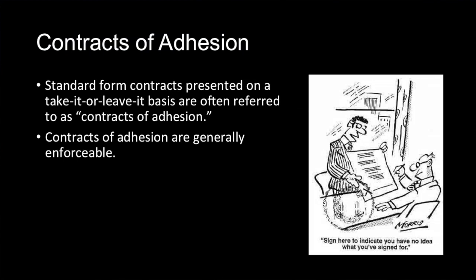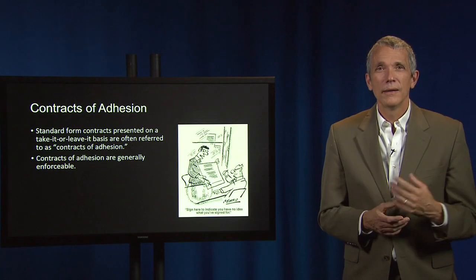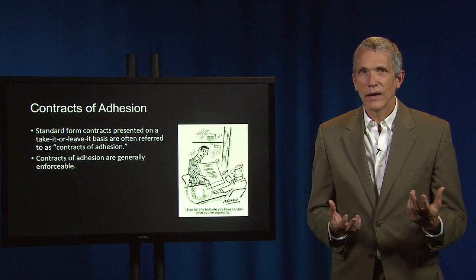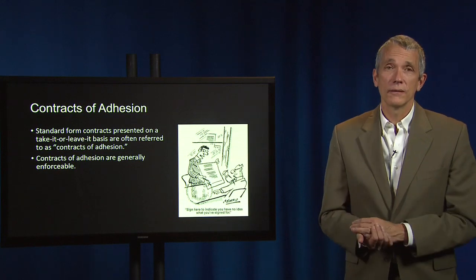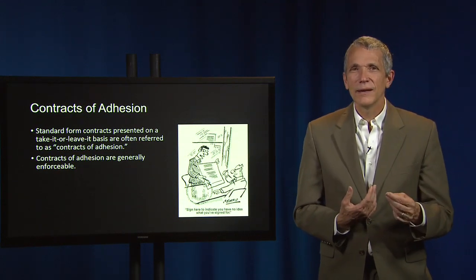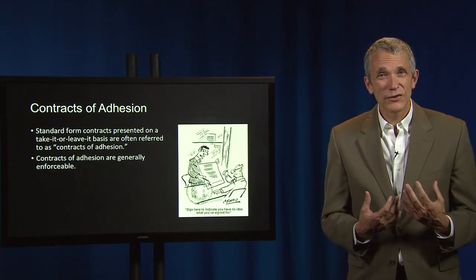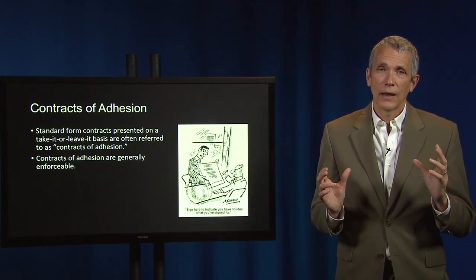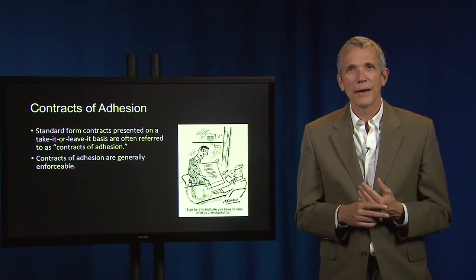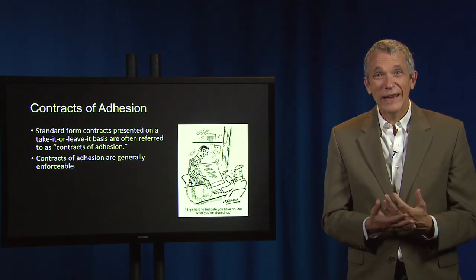Standard form contracts presented on a take-it-or-leave-it basis are often referred to as contracts of adhesion. California courts have taken the lead in holding that a contract of adhesion is always procedurally unconscionable. The unconscionability question in California then boils down to whether the bargain is sufficiently unconscionable from a substantive standpoint to warrant non-enforcement. Notwithstanding California's position, however, contracts of adhesion are generally enforceable.